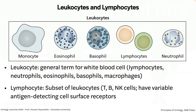It's a really amazing process. The participants are leukocytes and lymphocytes. A leukocyte is a general term for a white blood cell, including lymphocytes, neutrophils, eosinophils, basophils, and macrophages. Lymphocytes are a subset of leukocytes — they include T cells, B cells, and NK cells. They're distinguished because they have variable antigen-detecting cell surface receptors; the other cells do not.